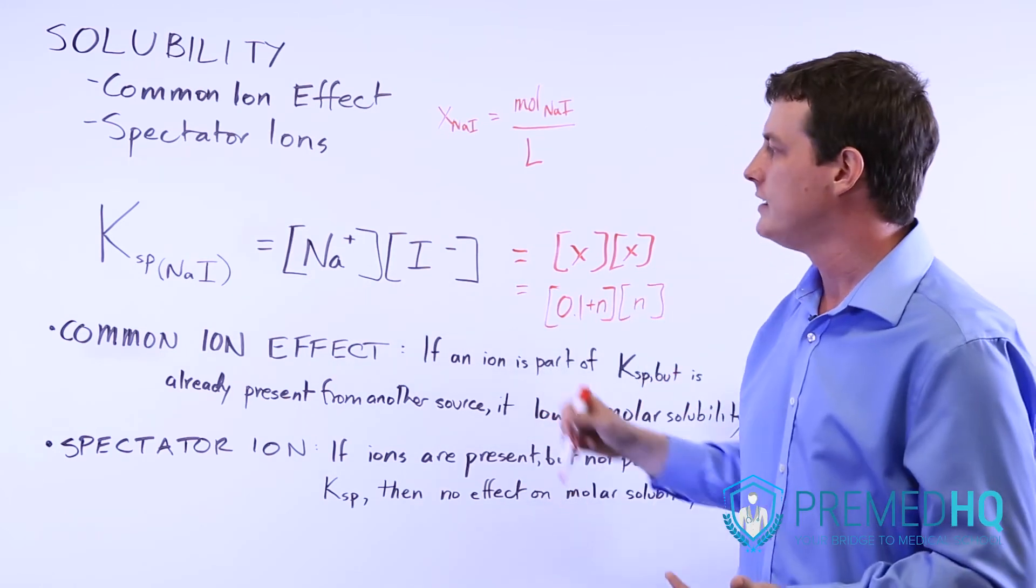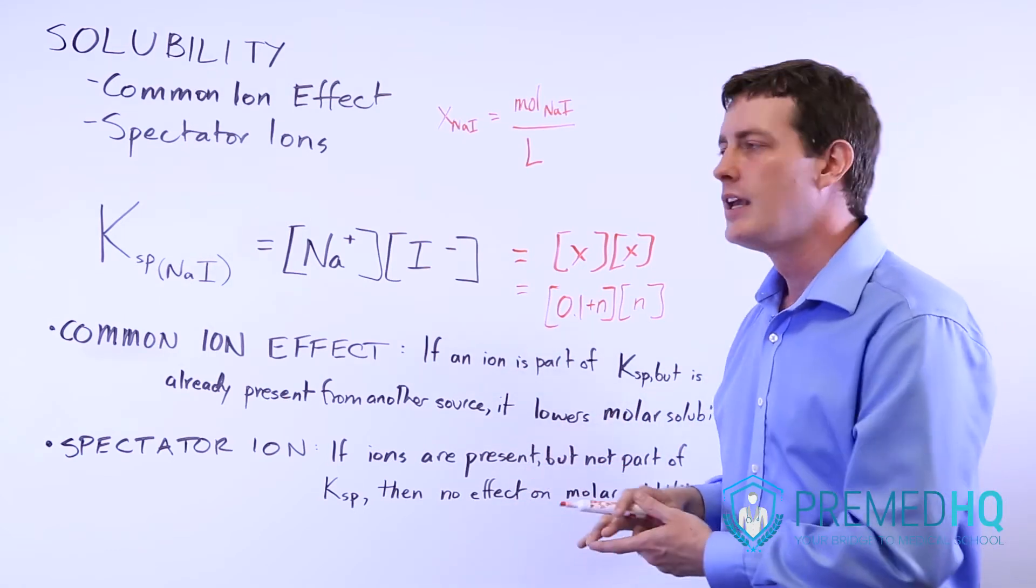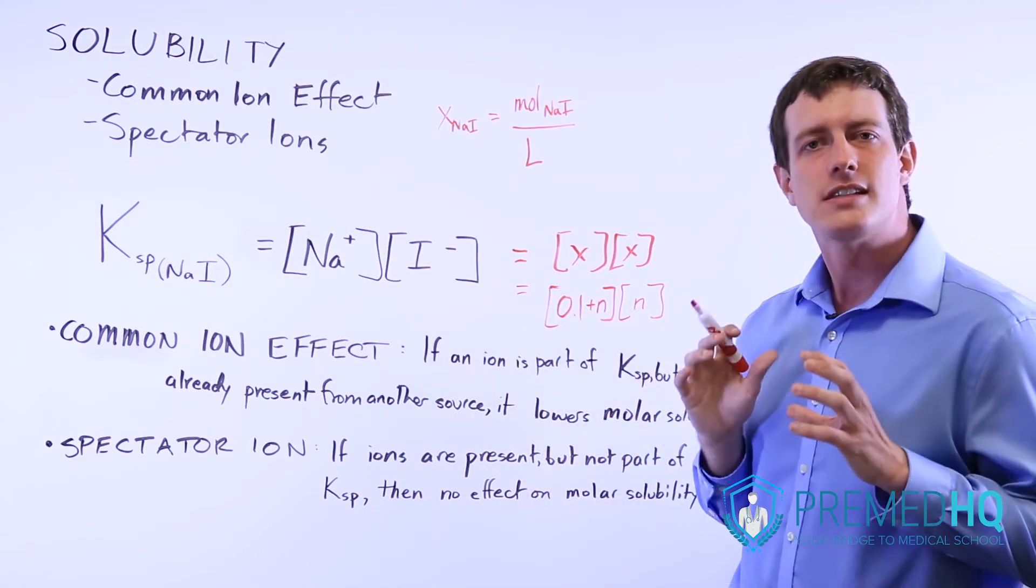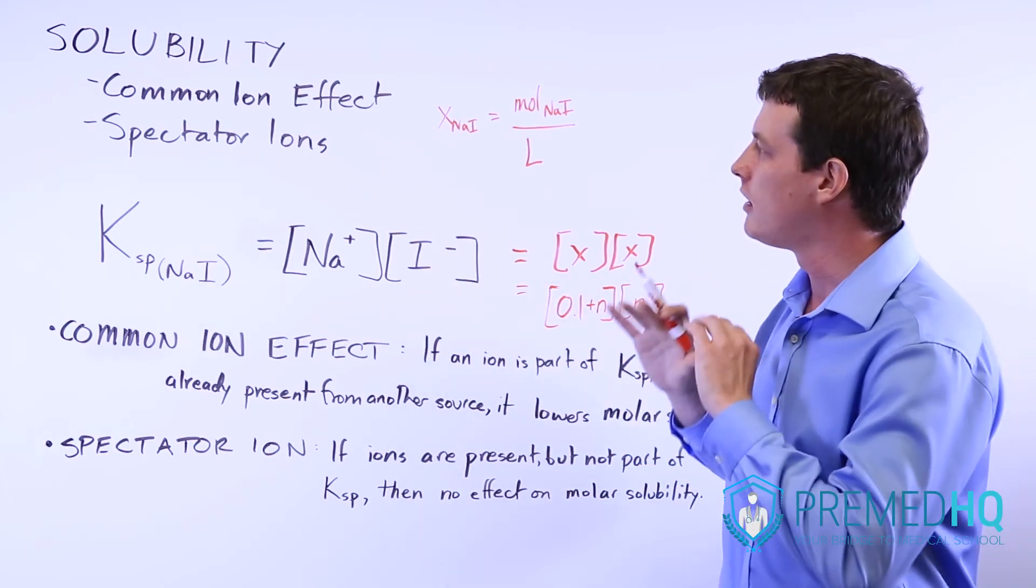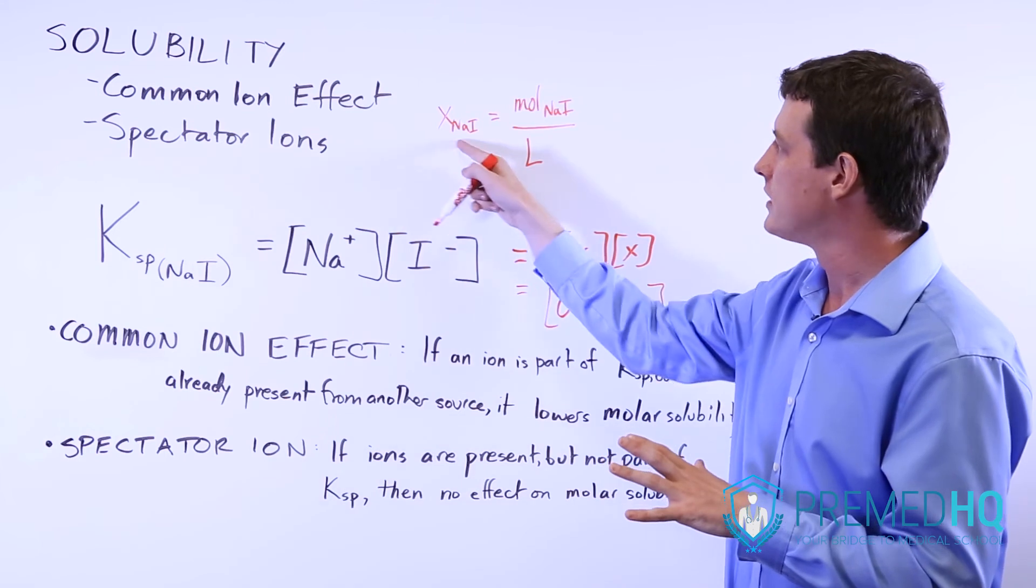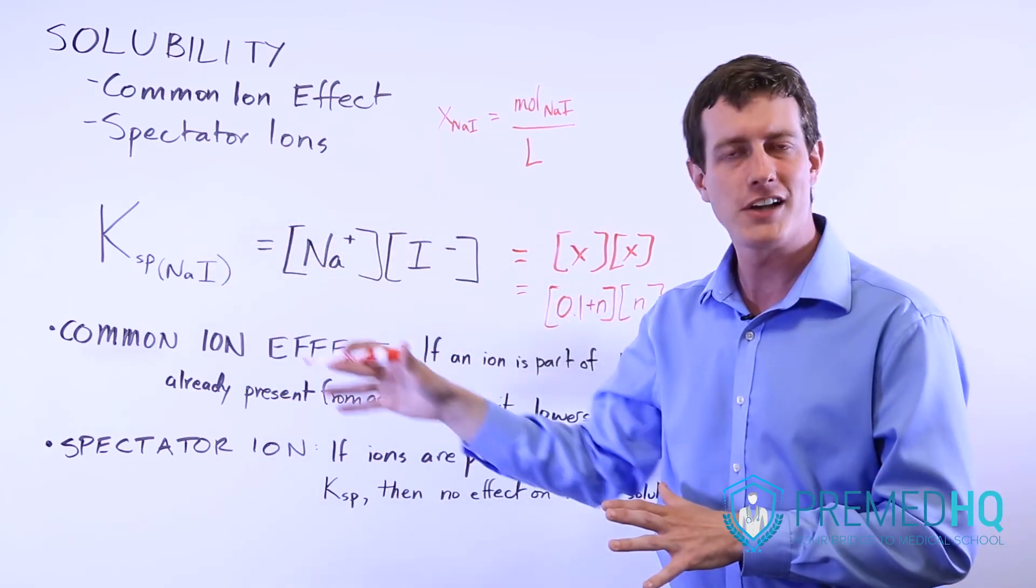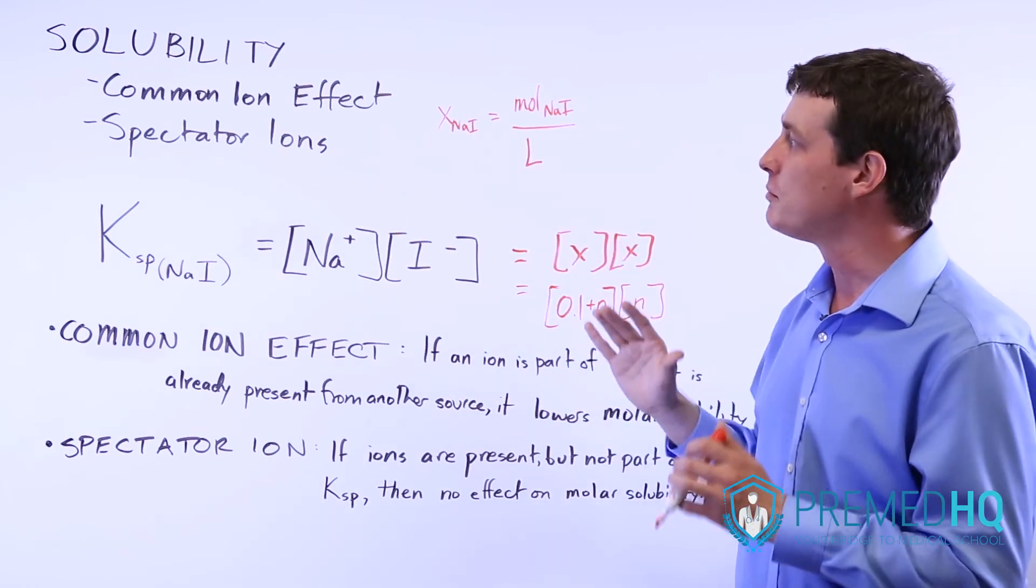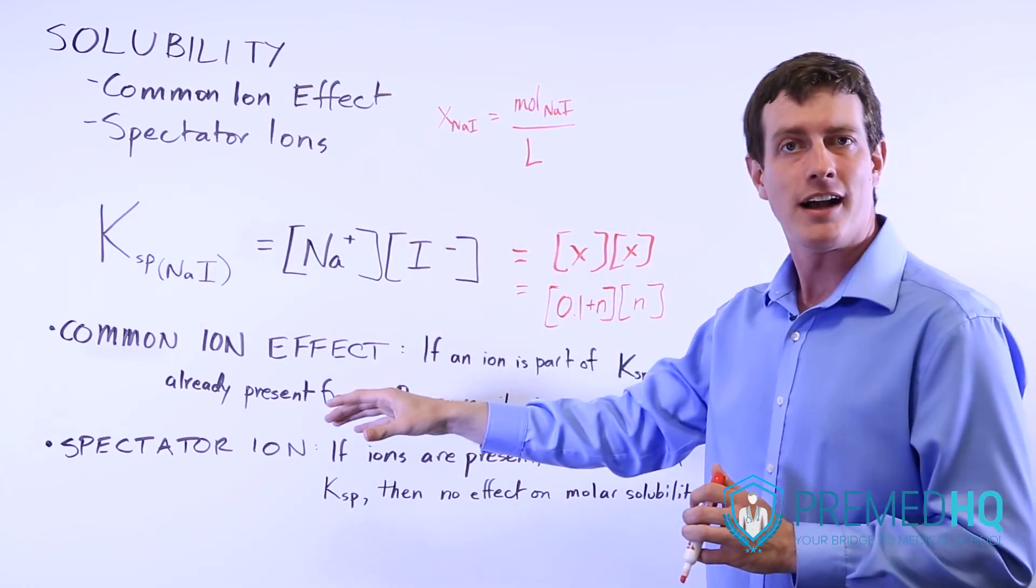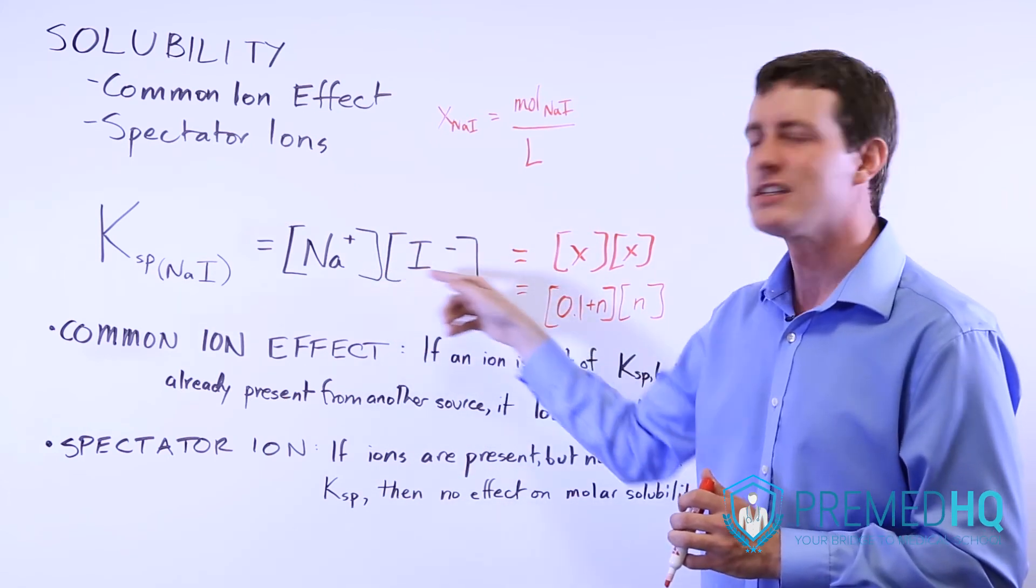However, if you added NaI to something like an NaCl solution, the already existing Na will make it so that you dissolve less and less of this sodium iodide and you reach the KSP value faster. Thus, the molar solubility of NaI will be affected by a common ion, meaning that there already is present some ion that is part of this KSP.